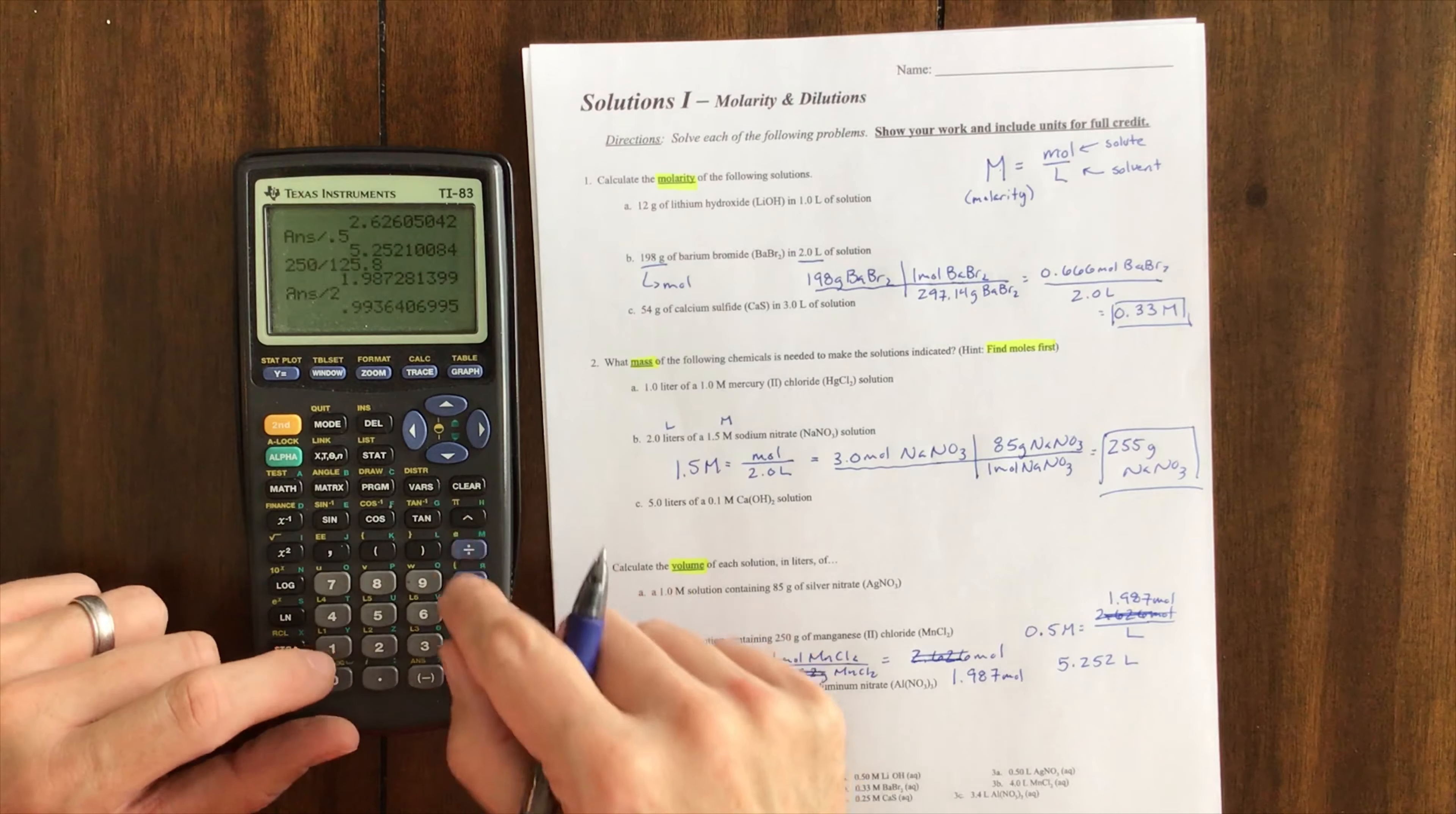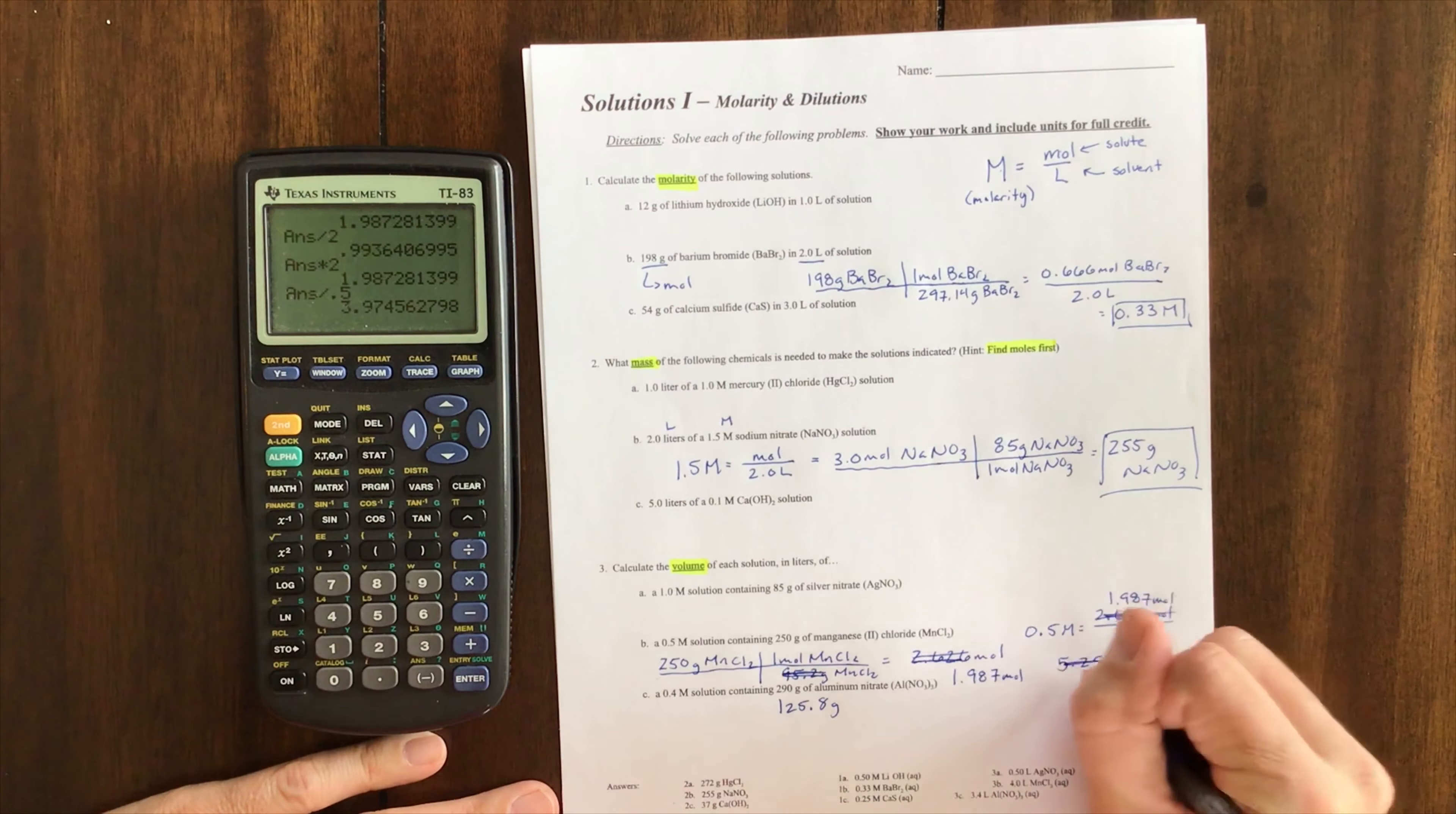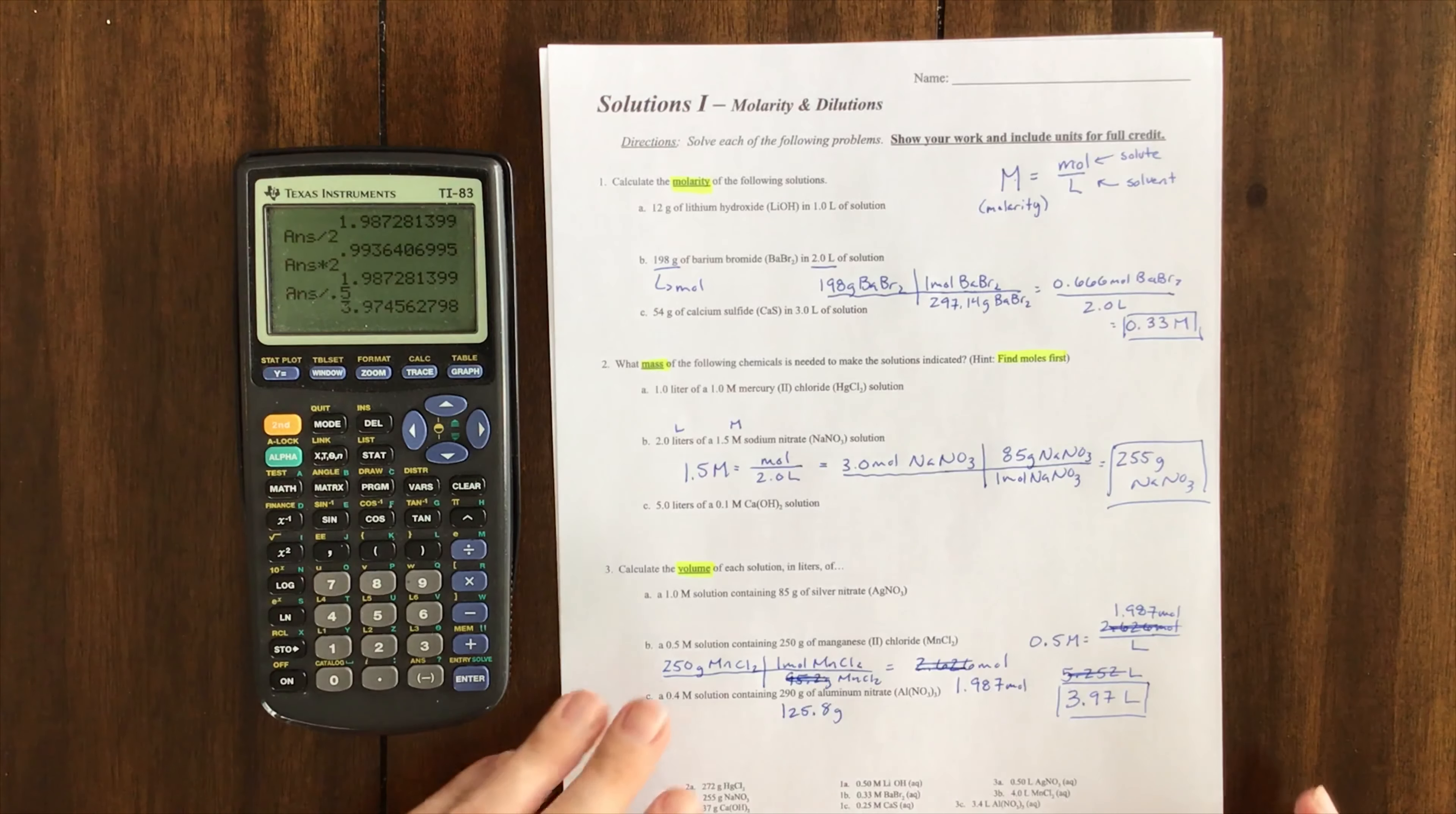If I divide that, I get 3.97 liters, or roughly about 4 liters. So that's how that works.